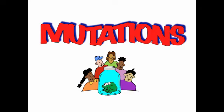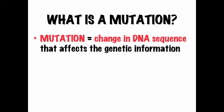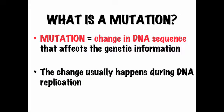Today we're going to be talking about mutations. A mutation is basically any time there's a change in the DNA sequence that affects the genetic information. The change usually happens during DNA replication — where the DNA is being copied during the S phase of interphase in preparation for mitosis. Kind of like if you were writing out all the letters for DNA and you accidentally wrote an A where you were supposed to write a T — that would be an example of a mutation.